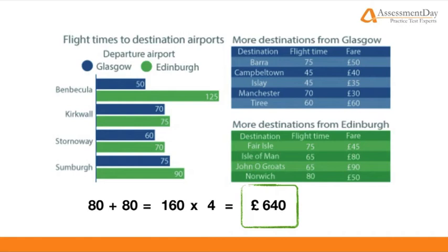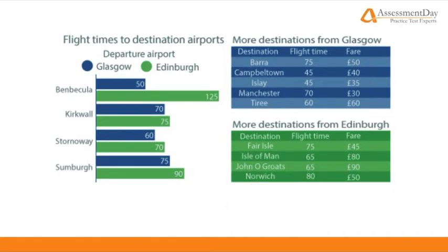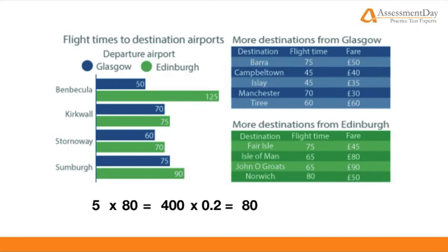The second scenario needs a little more calculation. The outbound flights for five adults: 5 multiplied by 80 equals £400. However, the return flights are the same price reduced by 80%, so 400 times 0.2 equals £80, and together they total £480.